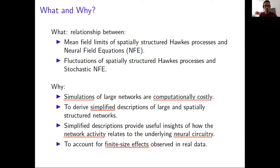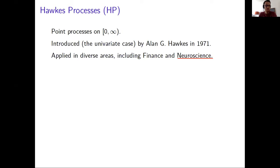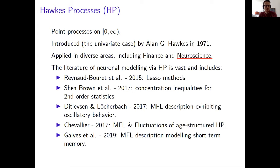So Hawkes processes are just point processes on R plus. They were introduced by Hawkes in the seventies. And very recently it became a very popular model in many areas, including finance and neuroscience. And just to cite some literature involving neuromodeling via Hawkes processes, I'd like to stress the paper from Paricio and collaborators where they develop Lasso methods. There's a paper from Chevallier and collaborators where they derive concentration inequalities for second order statistics. Then the paper from Suzanne Ditlevsen, Nevile Chambat, where they have this mean field description exhibiting oscillatory behavior.